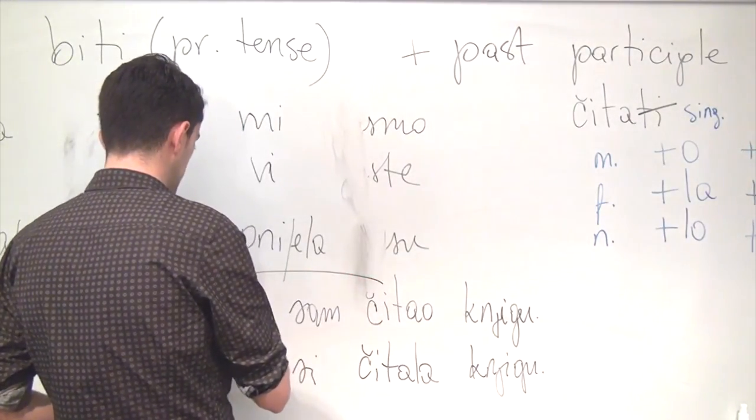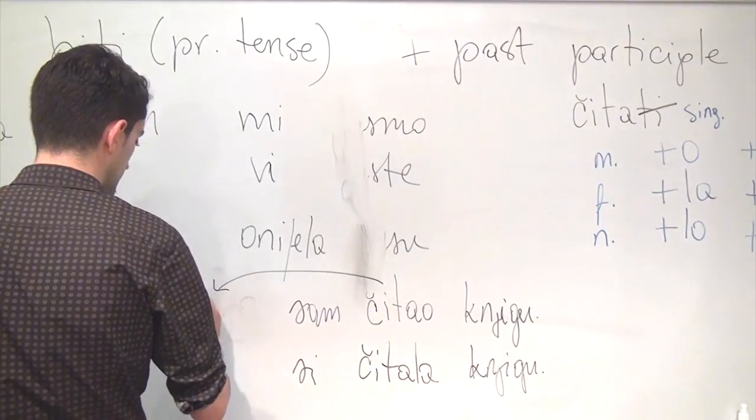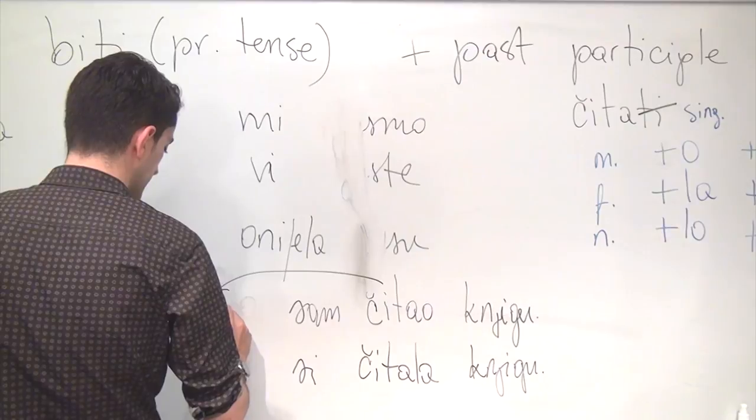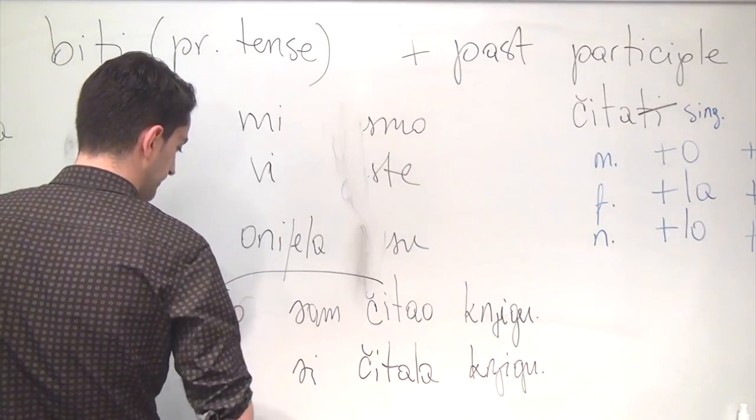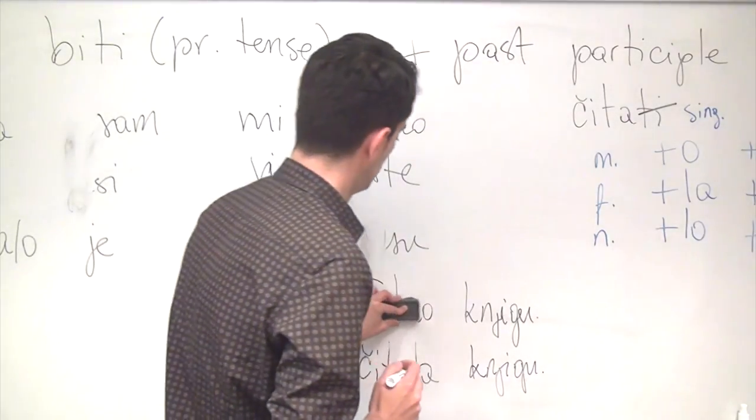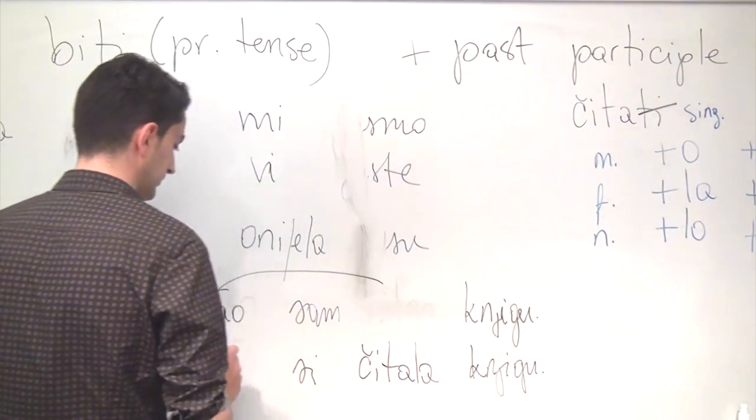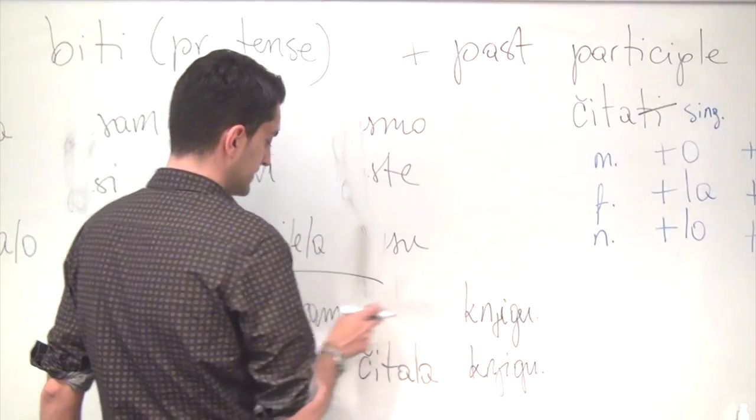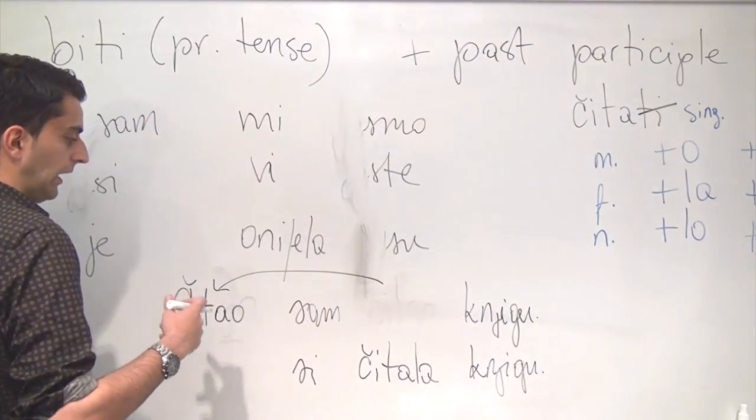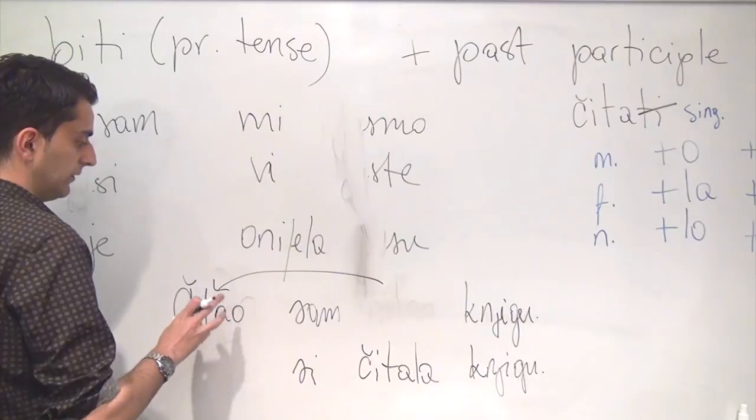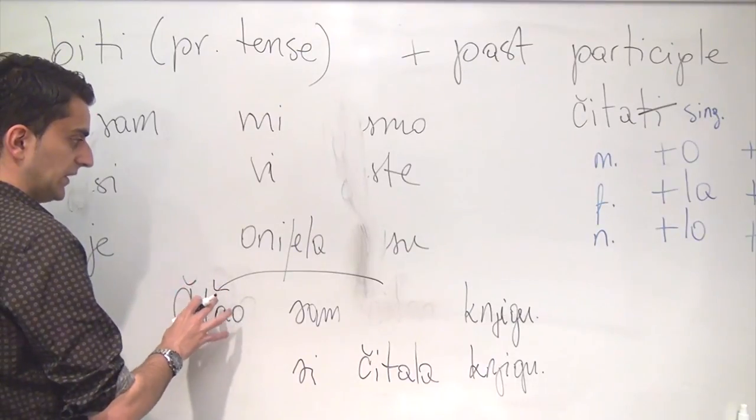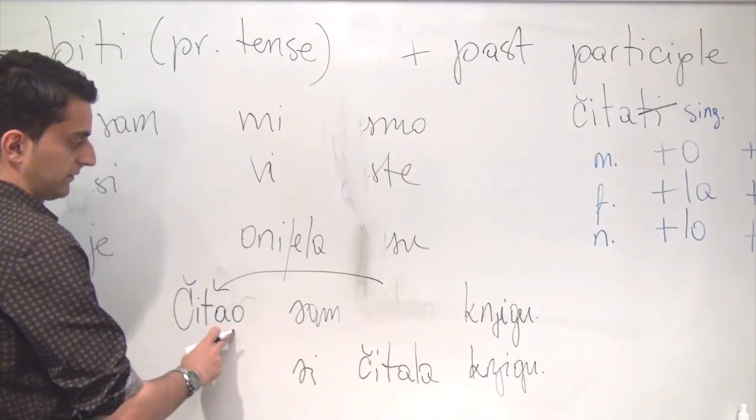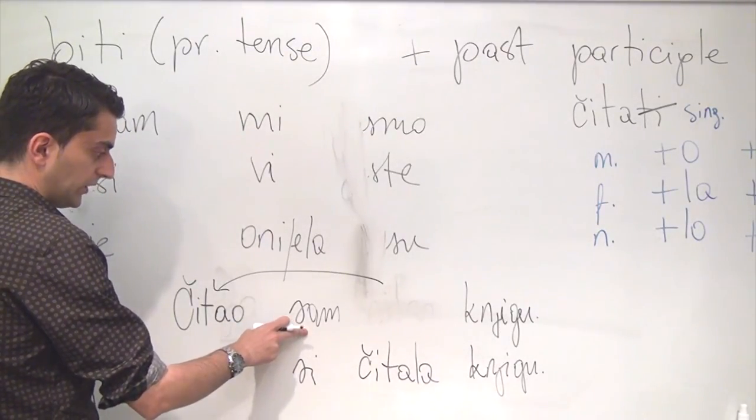So, put the main verb in its past participle form here. Get rid of it here. And what you get is čitao sam knjigu. It is assumed that I, or the grammatical subject here, is a male speaker who was reading a book, just from this suffix and from the auxiliary verb here.